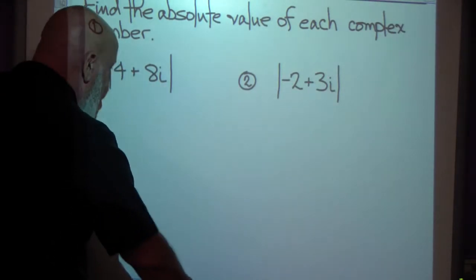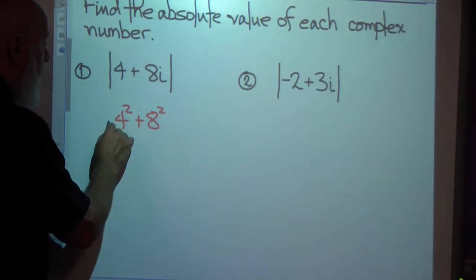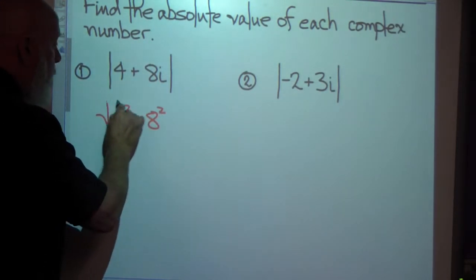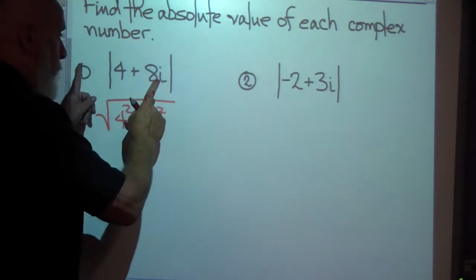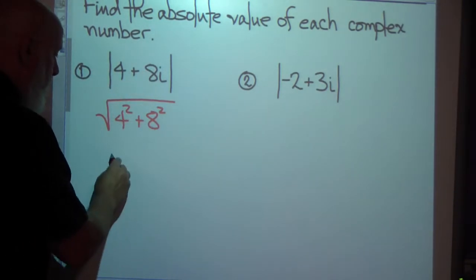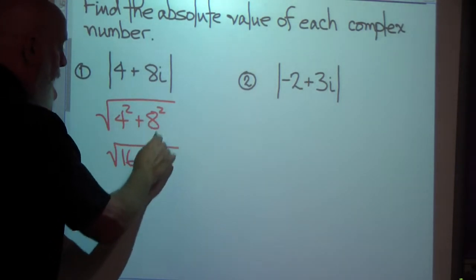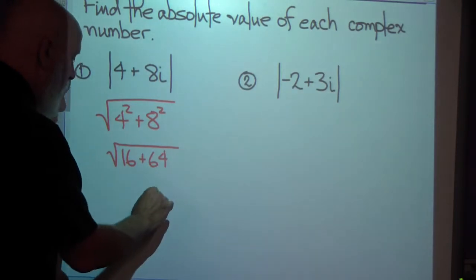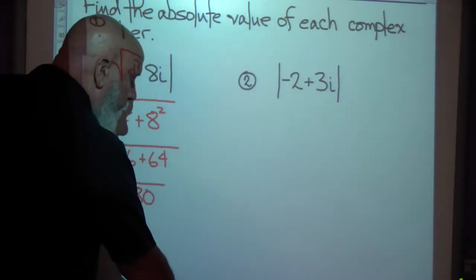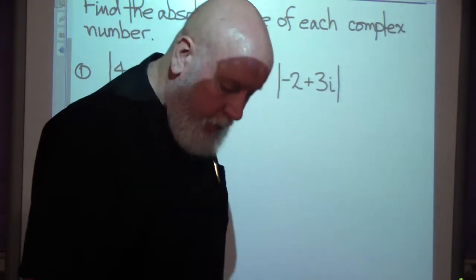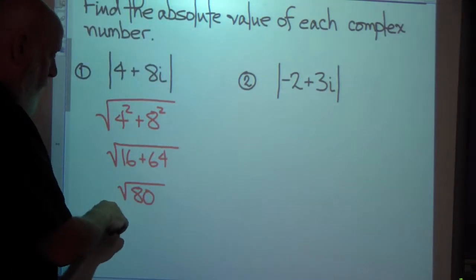I'm going to take a squared plus b squared and take the square root of that. That gives me the absolute value of this complex number. So this will be the square root of 4 times 4 is 16, plus 8 times 8 is 64, giving the square root of 80. If you use your TI-30XS, it will tell you 4 radical 5.